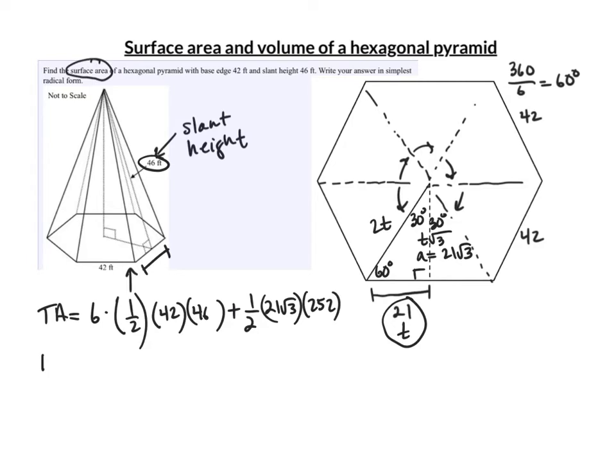Our total area then is the first part ends up being 5796. Plus, we multiply all the whole numbers there, and we get 2646 root 3. And this is area, so this would be feet squared.